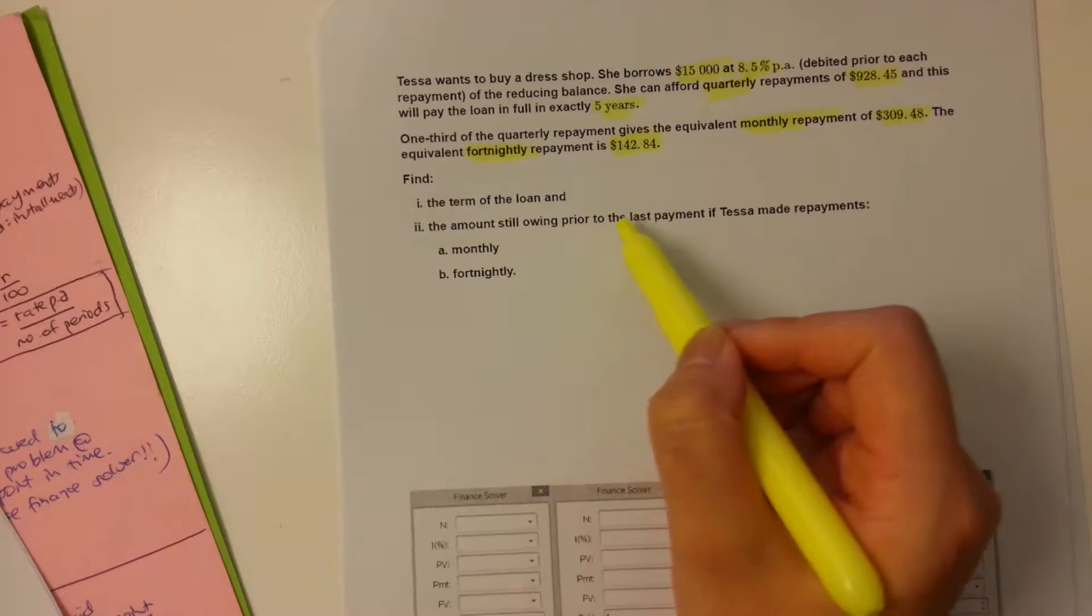the whole loan would have been paid off. Now, the thing that you need to look out for here is, if the N looks something like this, what it's saying is that you need to pay 59 repayments of that value, and then there's going to be a little bit left over, okay? And that is the amount we need to look for in our next question. We want to find out the amount still owing before the last repayment. So, we have 59 repayments of $309.28, and then we have a final repayment, which is going to be obviously a lesser amount, okay? And we're going to work out what that is.